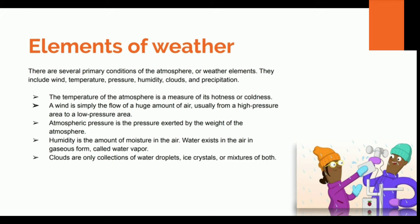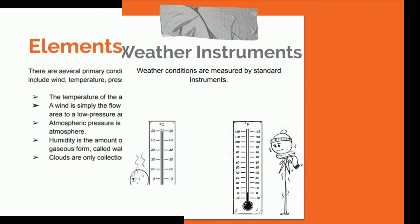Those are the definitions for weather elements. Now let's get into our weather instruments. We collect meteorological data by using weather instruments, where weather conditions are measured by the standard weather instruments as seen on this slide. On the slide we see two thermometers — one that is extremely hot and one that is freezing cold.